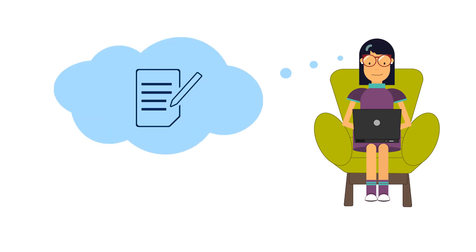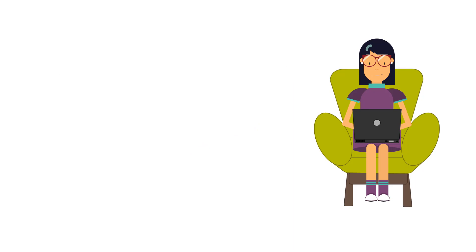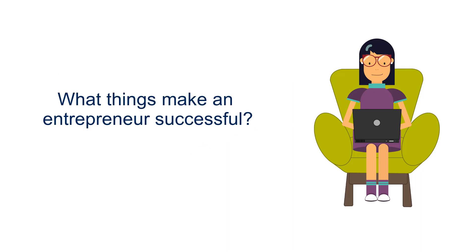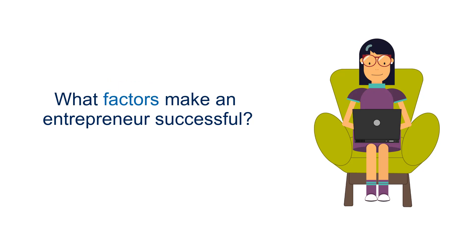She thought about the assignment and about her own interests in starting a business. She knows that not all new businesses are successful, so one important question might be: what things make an entrepreneur successful? Dana liked this question, but the word "things" seemed kind of vague. She decided that "factors" sounded more like the type of language her business class would use, so she settled on: what factors make an entrepreneur successful?